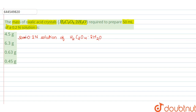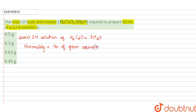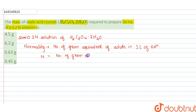To prepare this solution, first we should know what normality is. Normality is the number of gram equivalents of solute in one liter of solution, and normality is denoted by N, which is equal to number of gram equivalents upon volume of solution in liters.